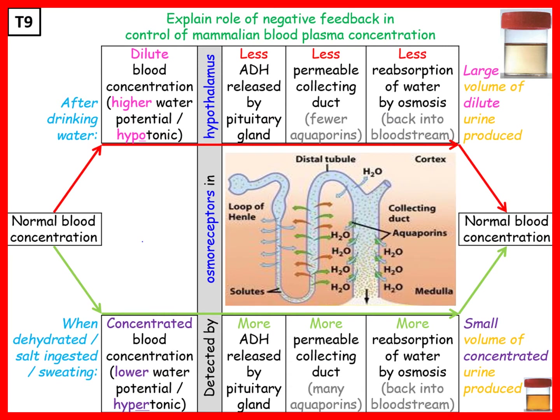ADH is an example we learned in GCSE. After drinking water, the blood concentration becomes dilute - there is a high water potential or hypotonic state detected by sensory receptors in the hypothalamus. Therefore less ADH is secreted by the pituitary gland, the collecting duct becomes less permeable, and less water is reabsorbed by osmosis back into the bloodstream. More water goes into the urine, making it more dilute.